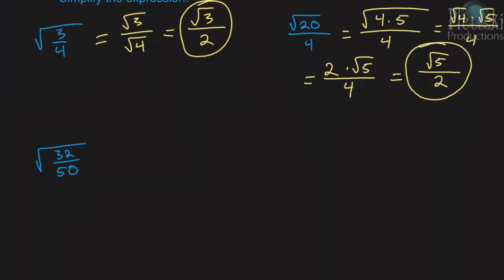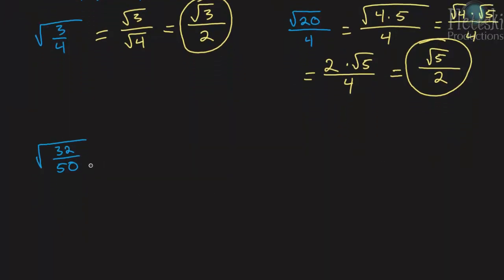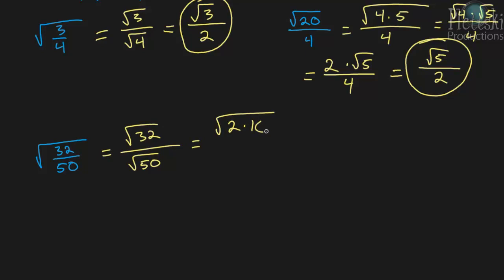Okay, this last one is the square root of 32 over 50. Using the quotient property, we can rewrite this as the square root of 32 over the square root of 50. Then let's factor each of these. So 32 is the same thing as 2 times 16, and 50 is 2 times 25. I'm choosing these numbers because I want to find factors that are perfect squares — 16 is a perfect square and so is 25.